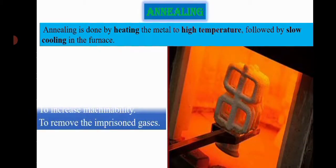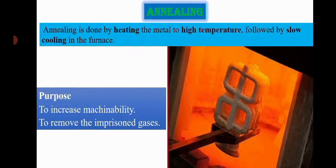First, the annealing process. Annealing means softening. The metal is heated at very high temperature, followed by slow cooling in the furnace. The purpose of annealing is to increase machinability and remove imprisoned gases.